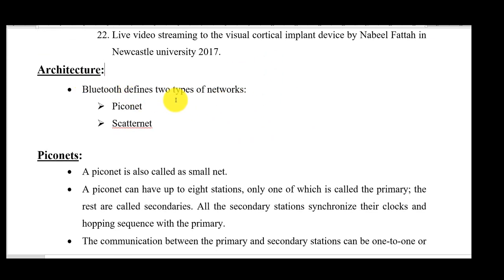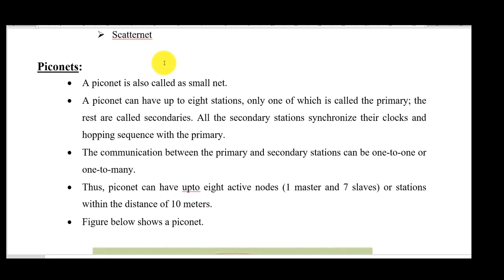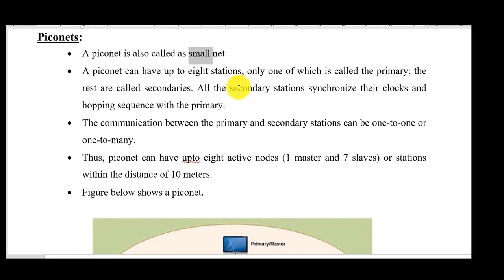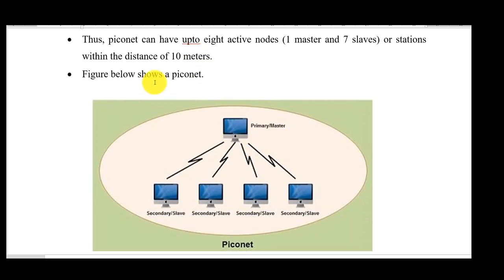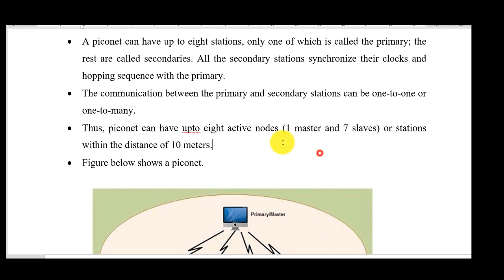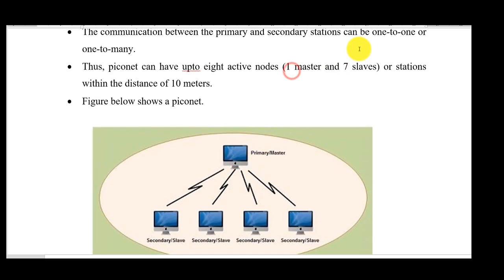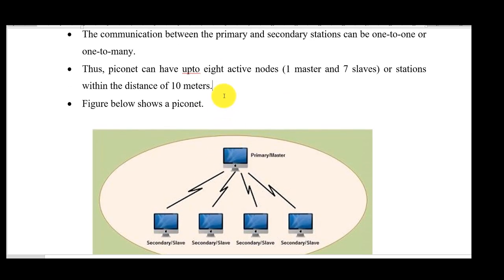The architecture of Bluetooth is divided into two types: Piconet and Scatternet. A Piconet is a small network covering everyday Bluetooth usage. In a Piconet, there is one primary device that becomes the master, and up to seven other devices can connect as slaves. The master is always the one that establishes the Bluetooth connection, giving a total of eight devices per Piconet.